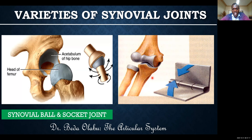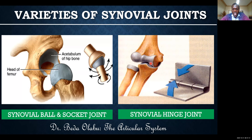Another variety of synovial joints is what we call the synovial hinge. A hinge is something that allows movement only in one axis. A good example of such a joint in the body is the elbow joint — it allows movement only in one axis, so we call it a hinge joint.